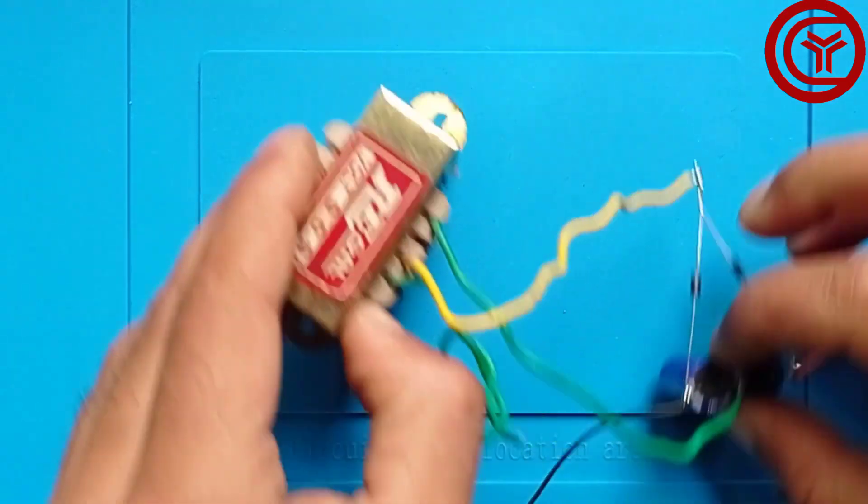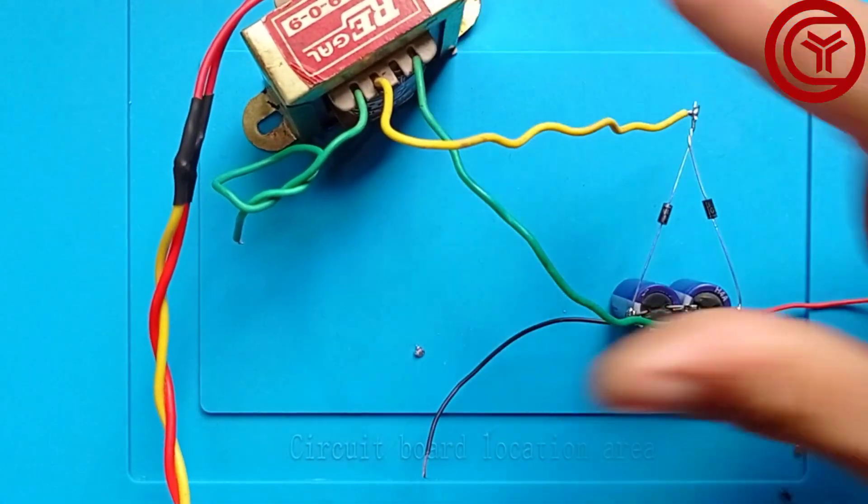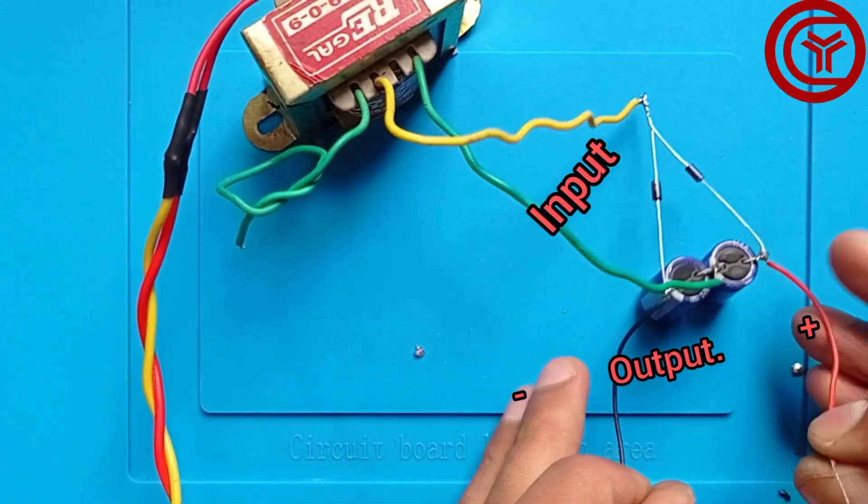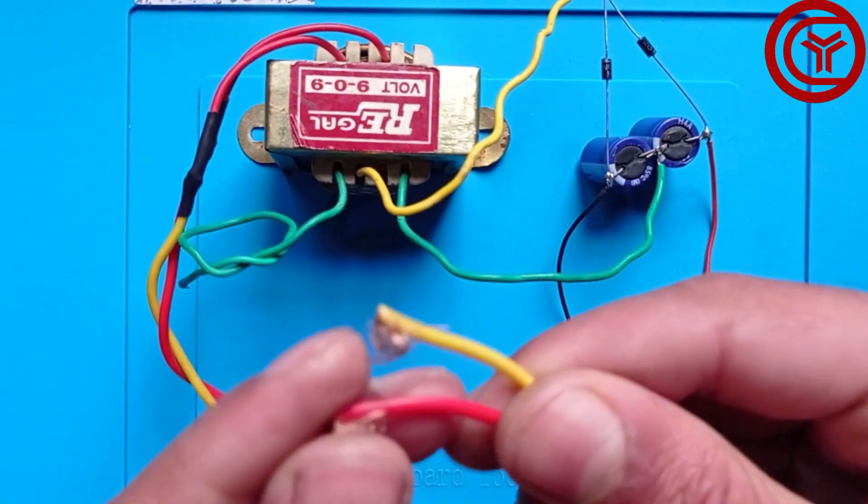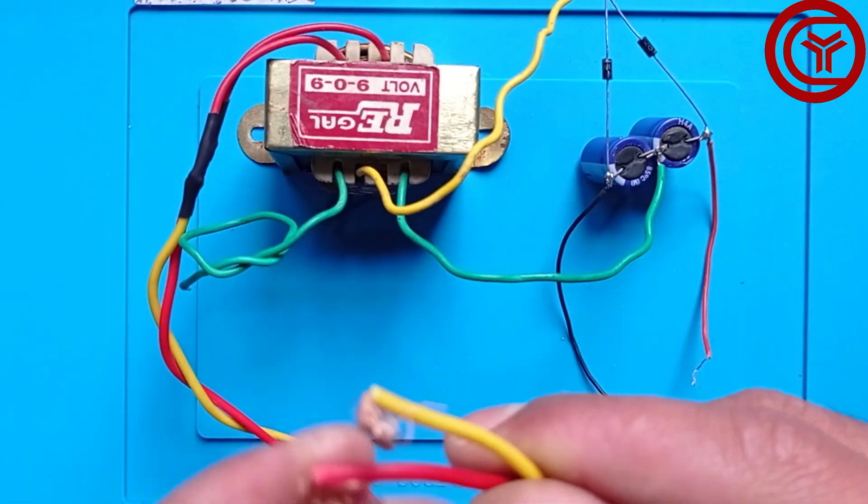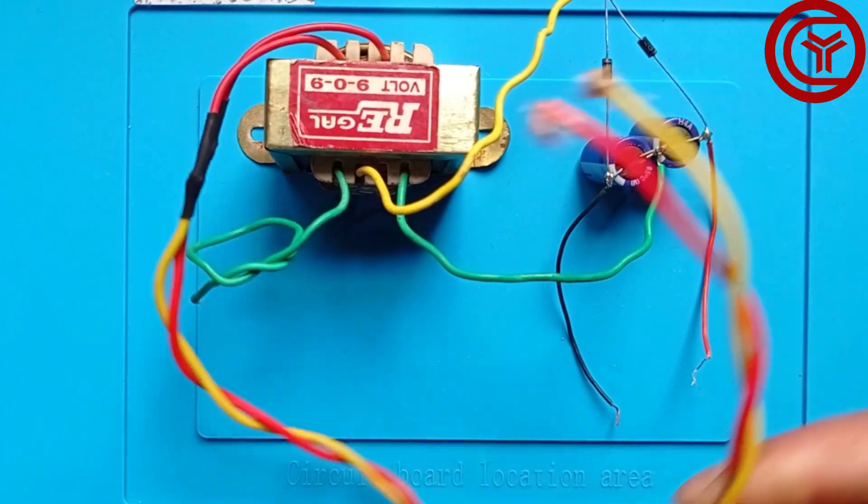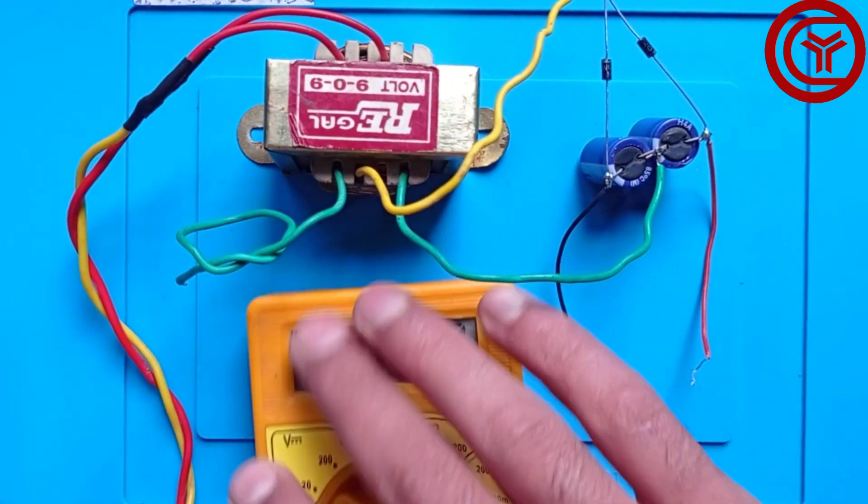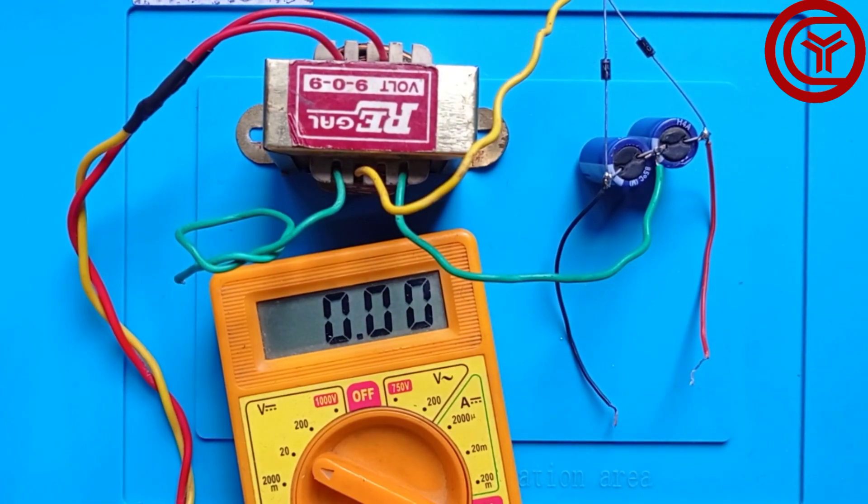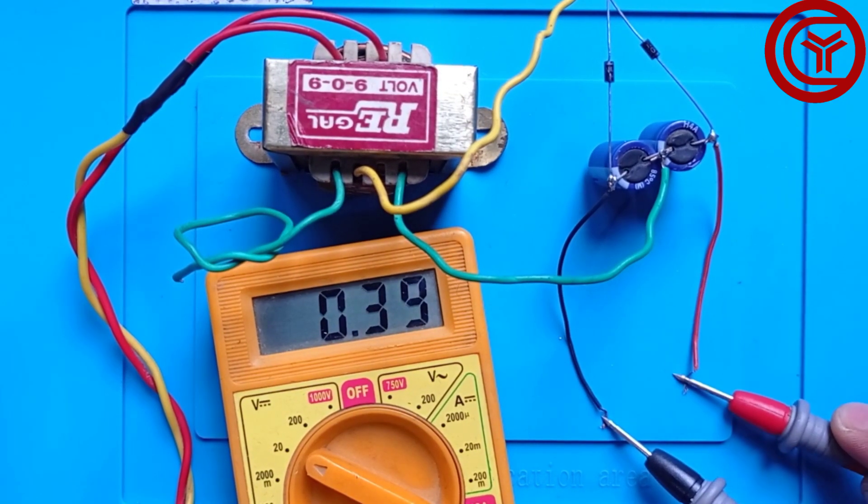Our circuit is complete now. It's testing time - these are the input and output. First, I'll show you the voltage of these two capacitors; they're totally empty as you can see.